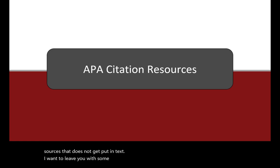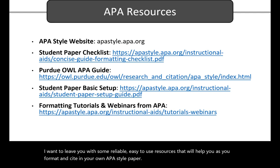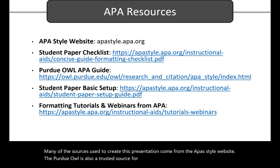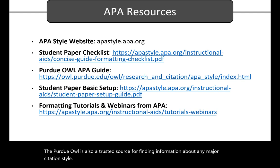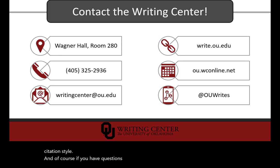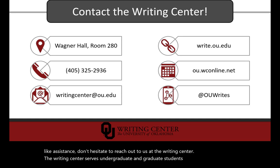I want to leave you with some reliable, easy-to-use resources that will help you as you format and cite in your own APA style paper. Many of the sources used to create this presentation come from the APA's style website. The Purdue OWL is also a trusted source for finding information about any major citation style. And of course, if you have questions about writing your paper in APA style, or if you'd like assistance, don't hesitate to reach out to us at the Writing Center. The Writing Center serves undergraduate and graduate students at the University of Oklahoma.